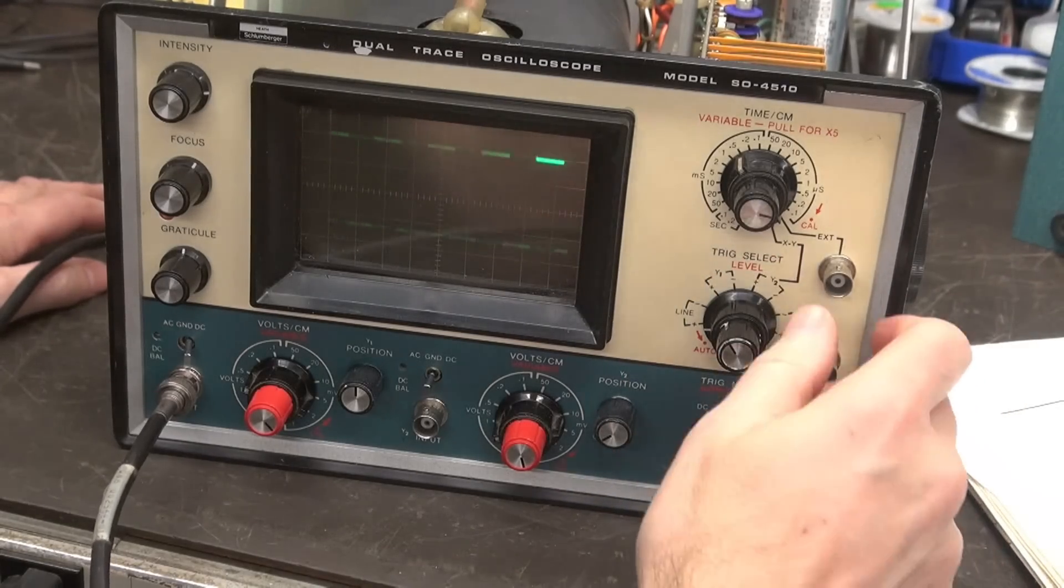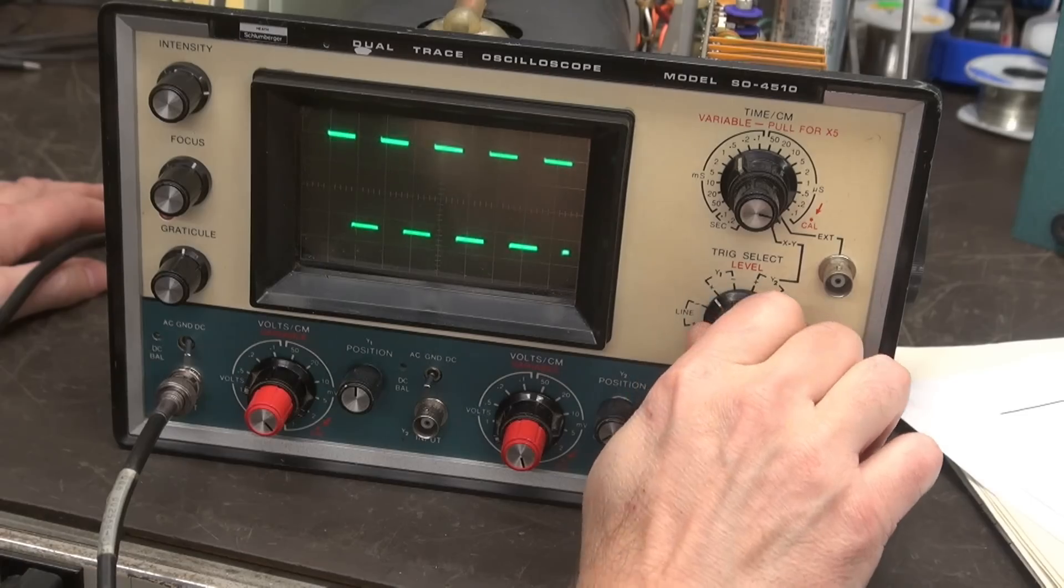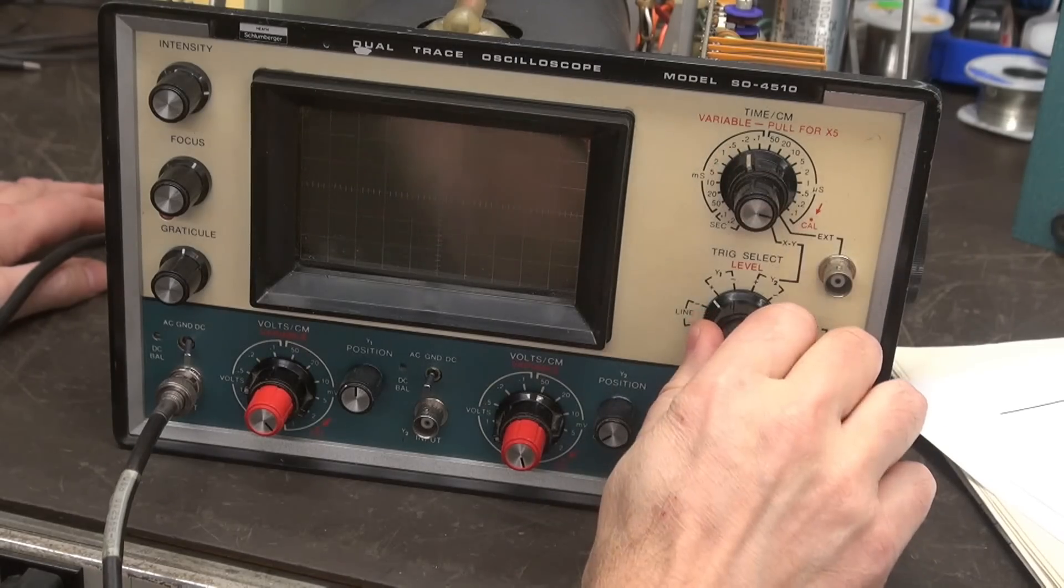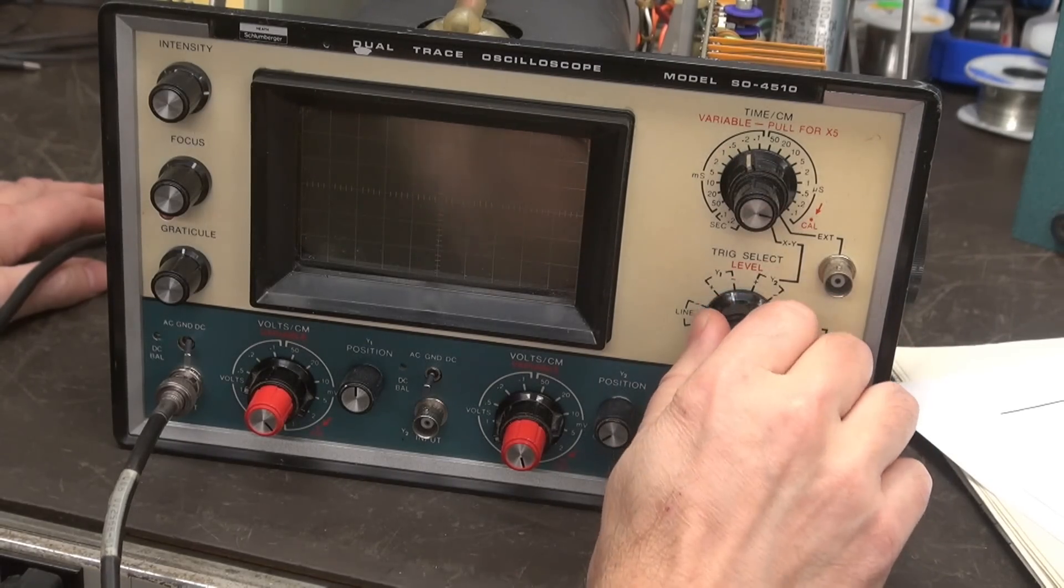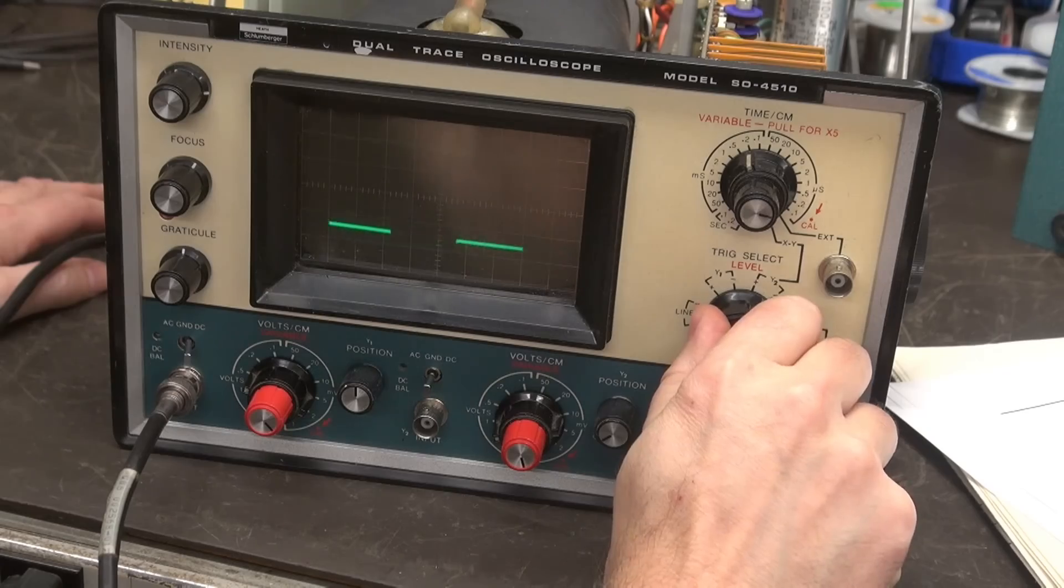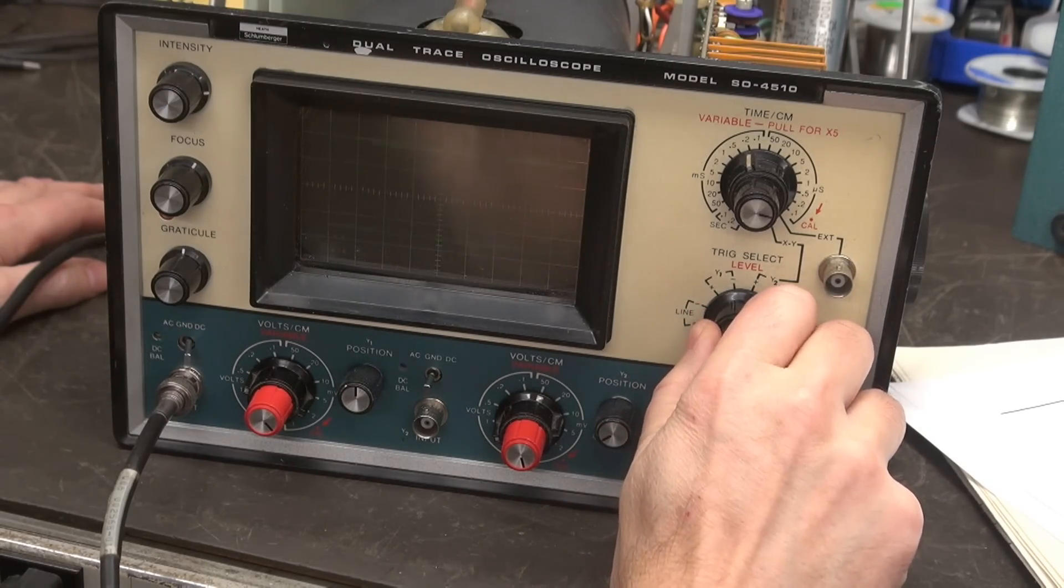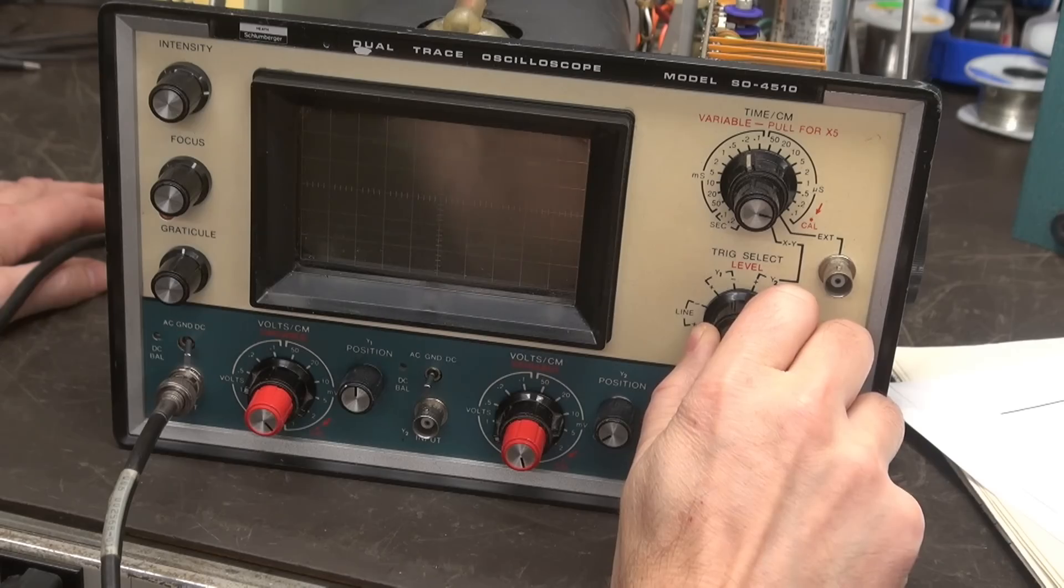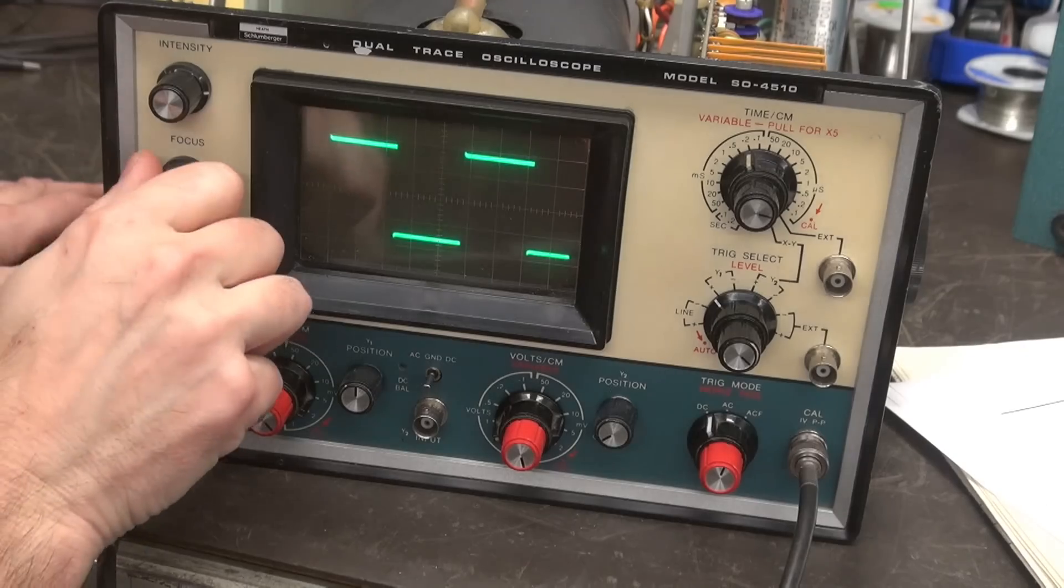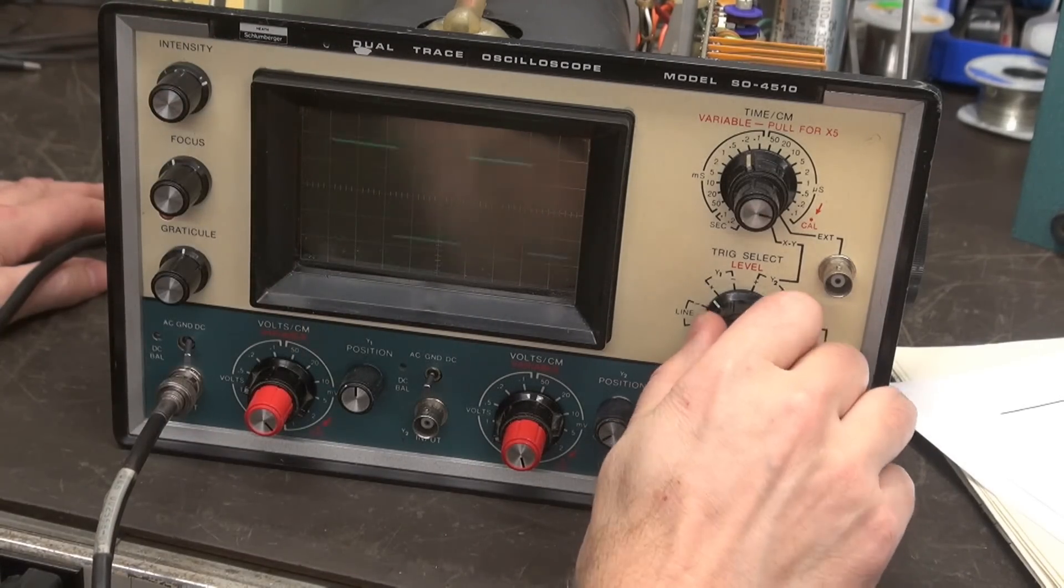Now let's go to the trigger position. So let's go Y1. Look at there. What do we got? It's triggering. Not so good on line, but it does try. Anyway, I always trigger on the channel I'm using. There it is, people. Triggering is repaired.